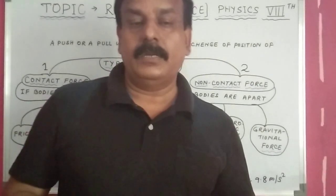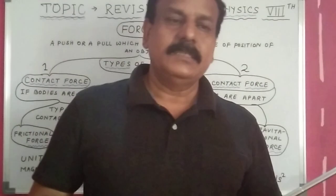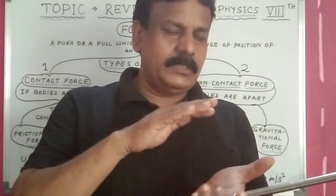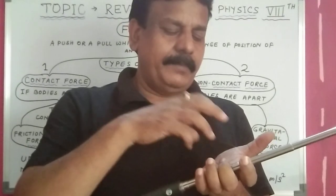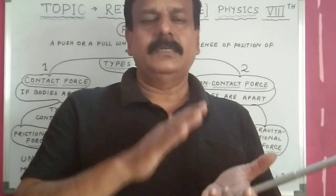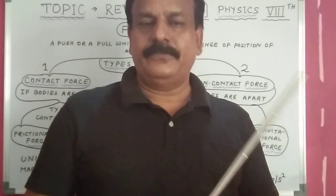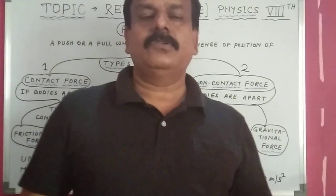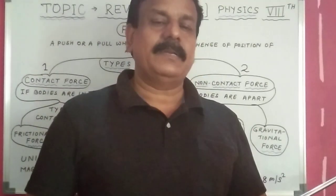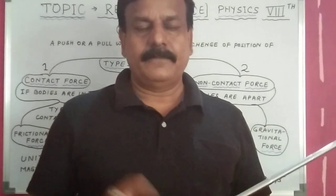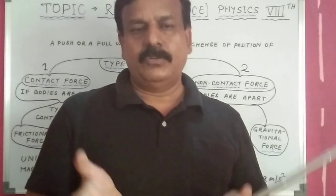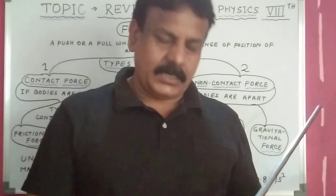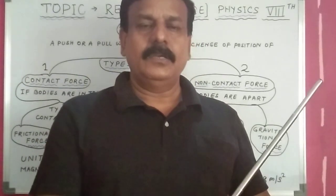For electrostatic force: take a plastic ruler, rub it with your hair or any cloth, and bring it near small pieces of paper — the paper is attracted and pulled by the ruler due to electrostatic force. Number three: gravitational force, also known as the force of gravity. This is the force applied by the Earth to all objects, or the force between any two objects in the universe.